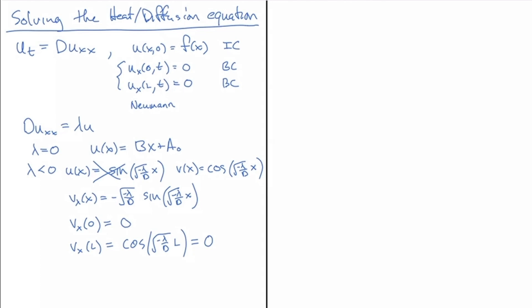The derivative is sine. So, the sine function is only going to be zero for certain lambdas. So, now we've, again, restricted our values of lambda, and they turn out to be exactly the same ones. Here, we end up with lambda equal minus n squared pi squared over l squared times d.